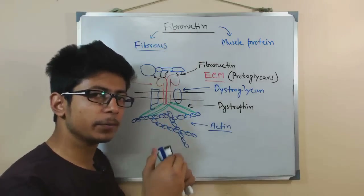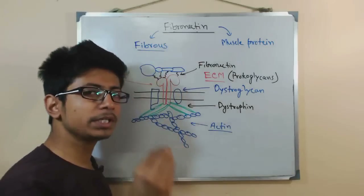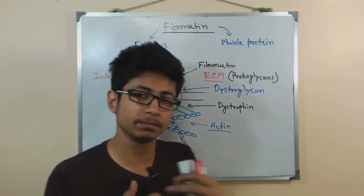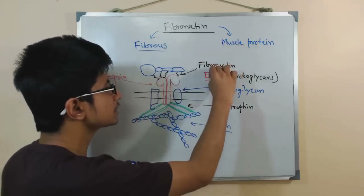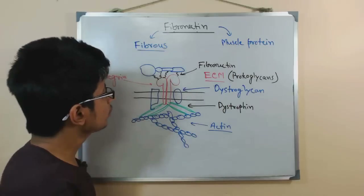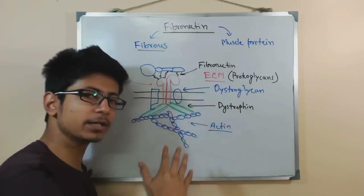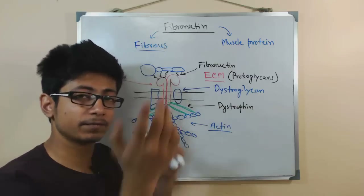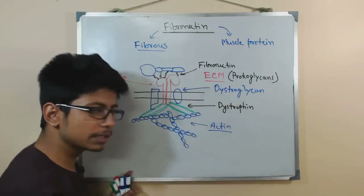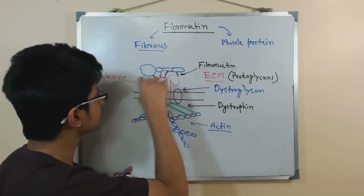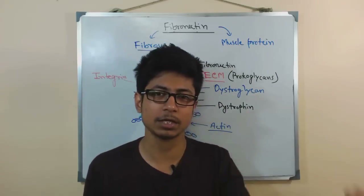Fibronectin is a fibrous protein made up of long alpha-helix structures. It is an important protein that helps support muscle strength and muscle stress. It is also an integral part of the extracellular matrix and intracellular matrix. Looking at the diagram, this is a muscle cell membrane, and inside it we have a protein called integrin, which connects the intracellular and extracellular matrix.